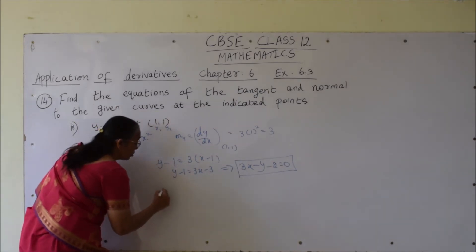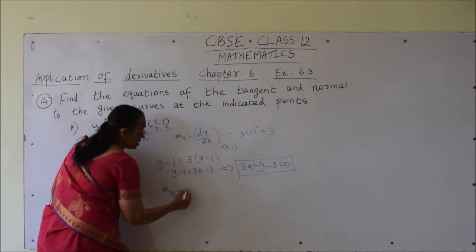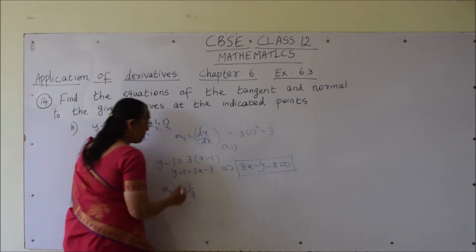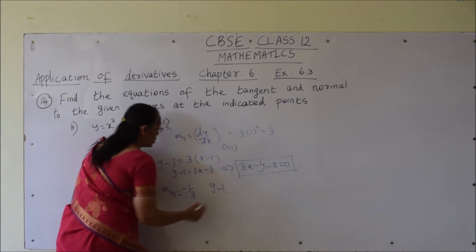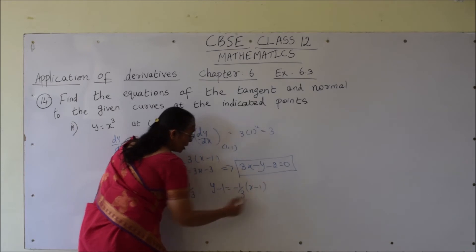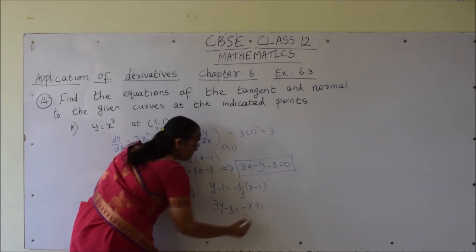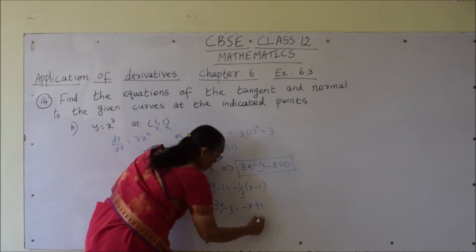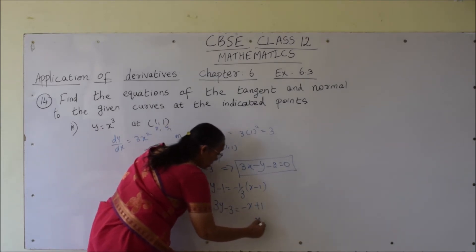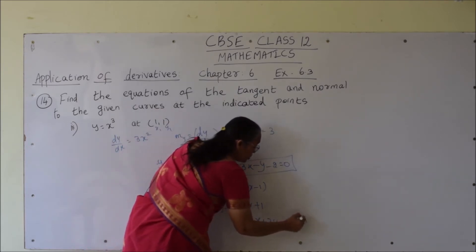Coming to the equation of normal: slope of the tangent is 3, so slope of normal is negative 1 by 3. So equation of normal: y minus 1 equals minus 1 by 3 of x minus 1. This gives 3y minus 3 equals minus x plus 1, or on simplification x plus 3y minus 4 is equal to 0.